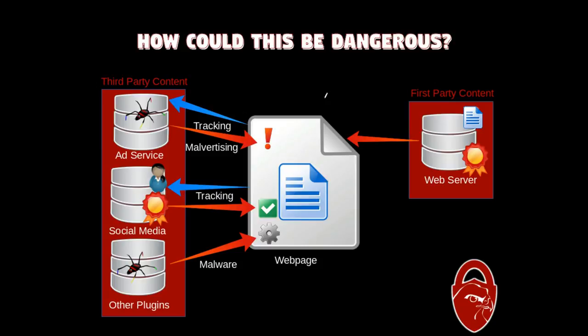So how could this be dangerous? Let's start with ads. Ad services are a privacy violation because these ad networks track where you go and what you do, so they can deliver customized ads. This is why when you buy something on Amazon and then go to a completely different website, you'll see ads showing things you recently bought or looked at on Amazon. Tracking is one of the big issues.